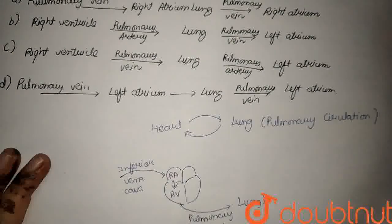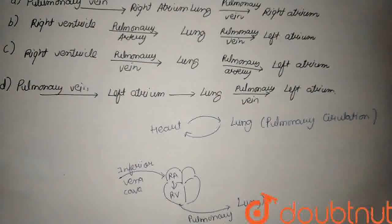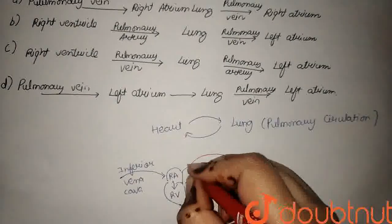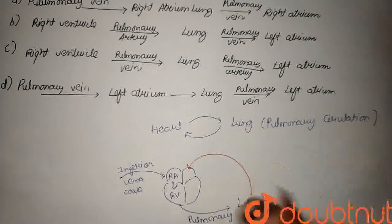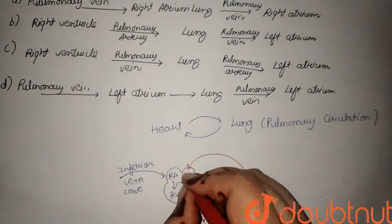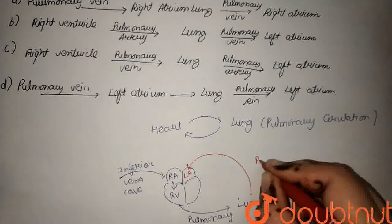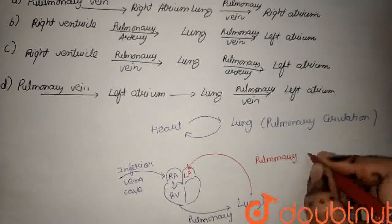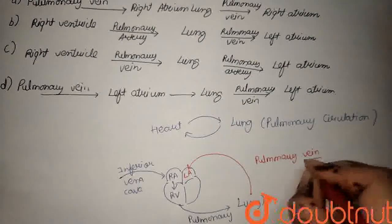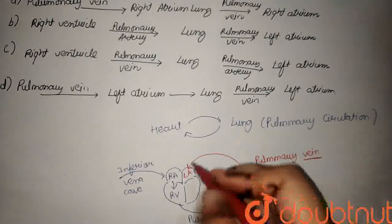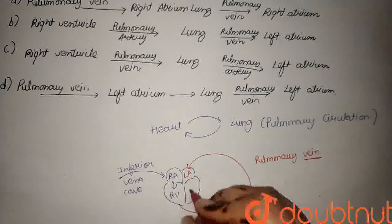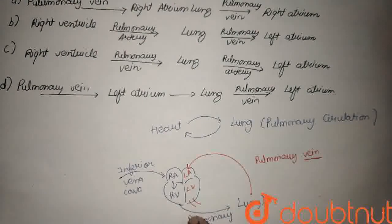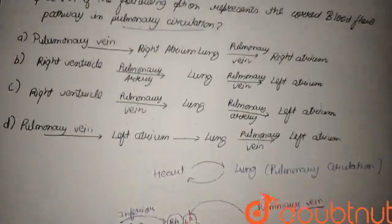Then the lung sends oxygenated blood to the left atrium via the pulmonary vein — here it's an artery going out, and a vein coming back. Then it goes to the left ventricle, and then to the whole body. So let's look at the options.